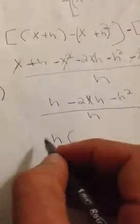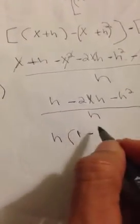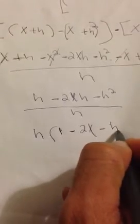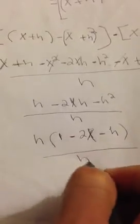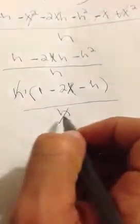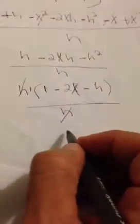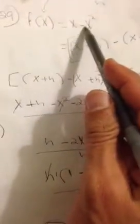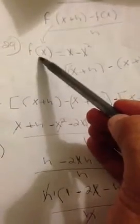We can see h in every term, so we factor out h. Dividing h by h gives 1, so we get: 1 minus 2x minus h. The h cancels out, and we're left with 1 minus 2x minus h. This is the output of the function — the answer to problem 29.